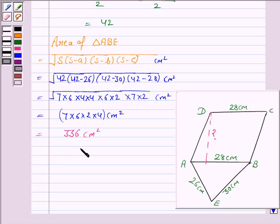So this is the area of triangle ABE. Now we are given that area of triangle ABE is equal to the area of parallelogram ABCD.